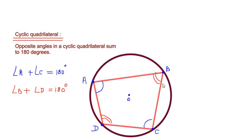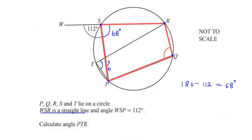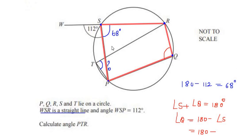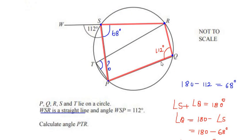Let us use this circle theorem to solve our example. Using the property, angle S is opposite to angle Q, so we can write: angle S plus angle Q equals 180 degrees. Therefore angle Q equals 180 degrees minus angle S. Here angle S is 68 degrees, so we get angle Q as 112 degrees.